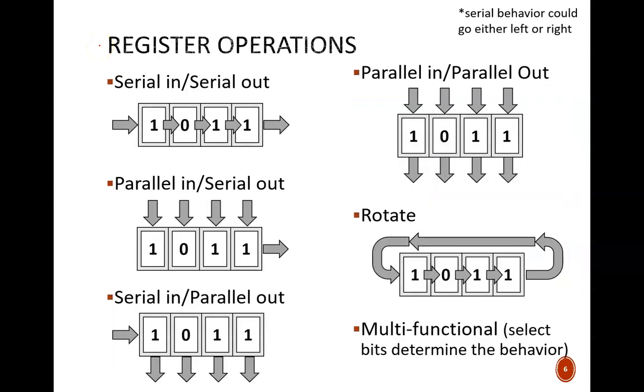This last slide summarizes some of the common register operations. All of these are combinations of serial or parallel movement of data. Serial means that bits move in a single file down one channel. Parallel means that bits move simultaneously down multiple channels. This is illustrated nicely in these top two examples.